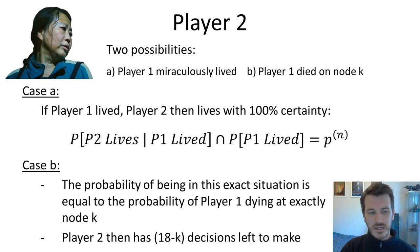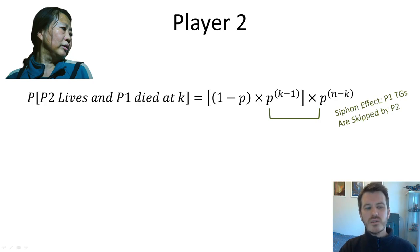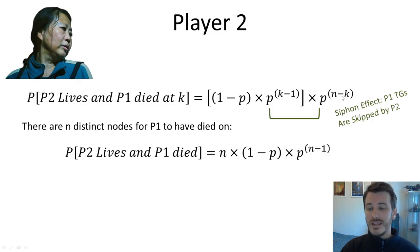It's the free gift that player 1 gives to player 2 in the context of them living. They also give a far greater gift in the context of them dying, which is what we will calculate in case B. So the probability of being in this exact position as player 2 is equal to the probability of player 1 dying at exactly node K. And player 2 then has 18 minus K decisions left to make. So what is the probability that player 2 goes on to live after player 1 died at node K? Well, we can work that out by simply multiplying here. If you can see where I'm pointing my mouse, p to the n minus K is the rest of her journey. And this is the probability that player 1 in square brackets got her here in the first place.